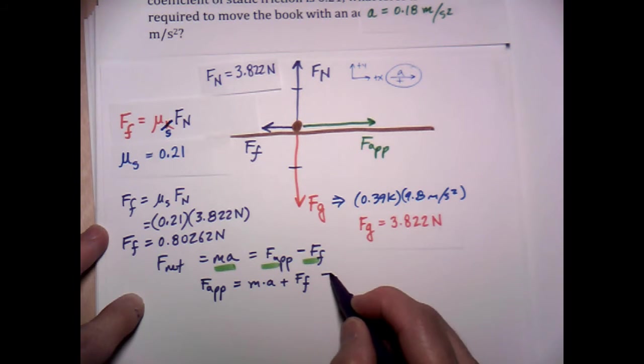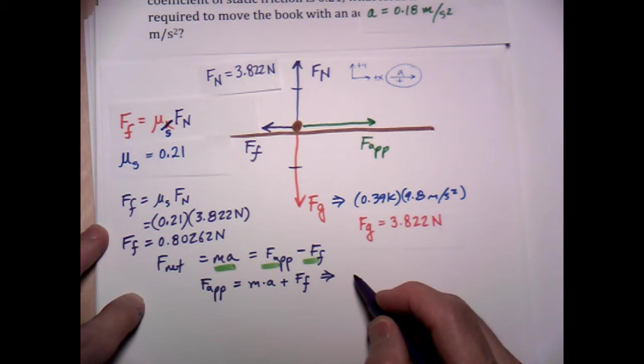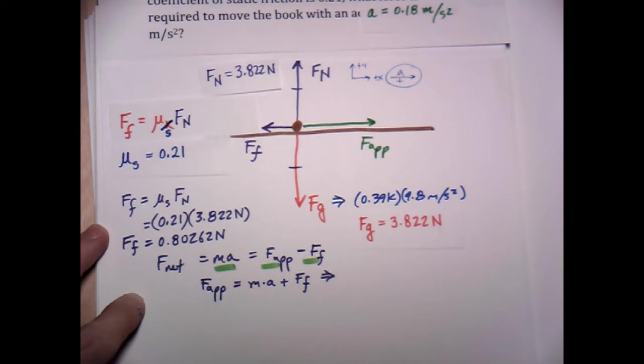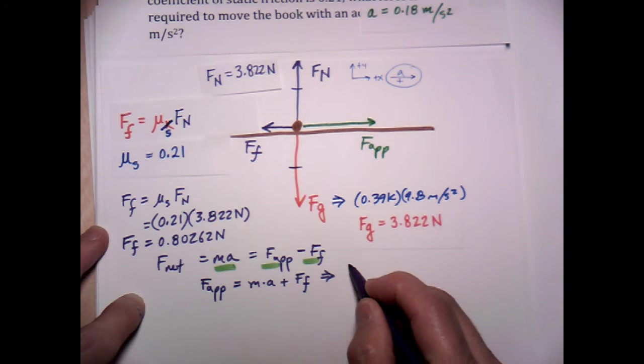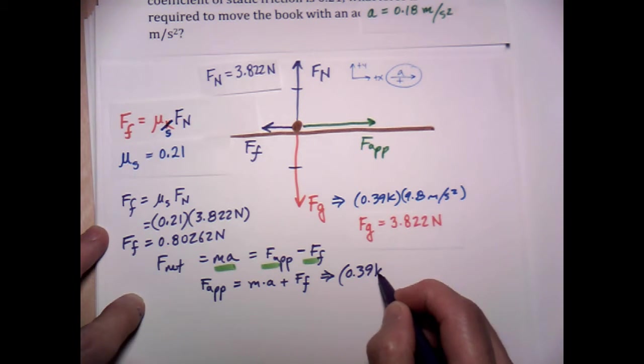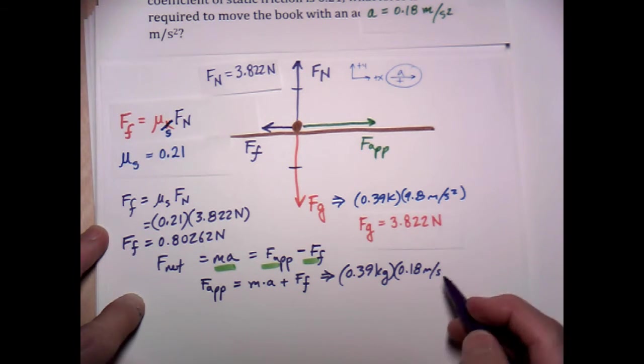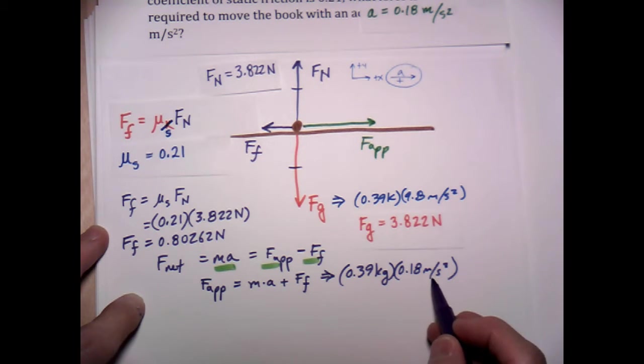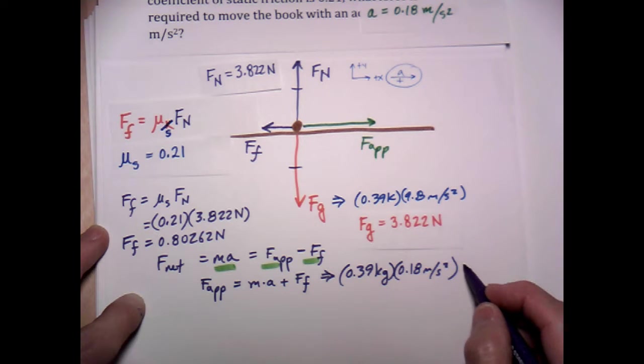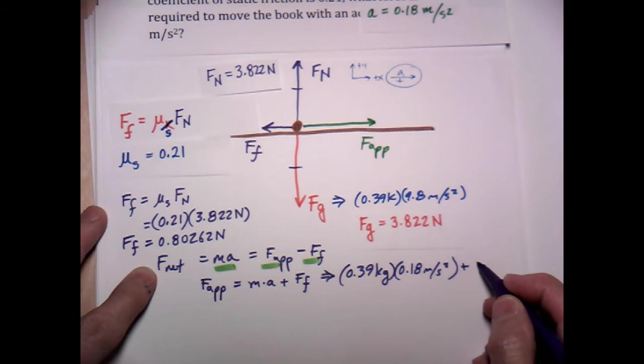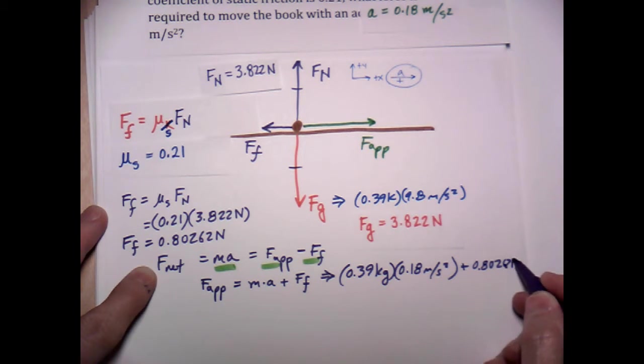Okay, so applied force now is equal to mass times acceleration. And in this case, it's not acceleration due to gravity. It's the acceleration given in the problem, which is 0.18 meters per second squared. So 0.39 kilograms times 0.18 meters per second squared, and you know that's going to come out to be newtons, plus frictional force, which is equal to this value right here. I'll just write down 0.80262 newtons.